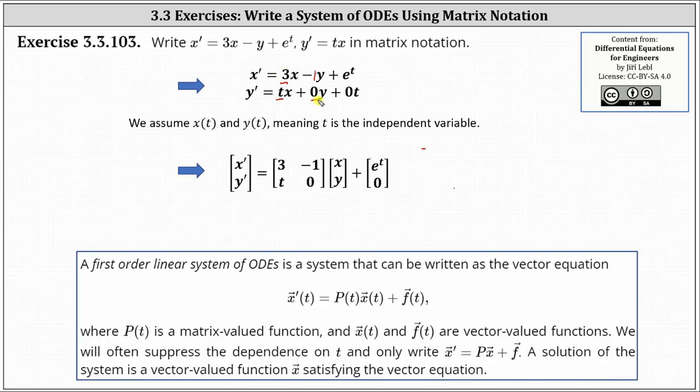we have t times x plus zero times y, P of t will be a two-by-two matrix-valued function with entries 3, negative 1 in the first row, and t zero in the second row.